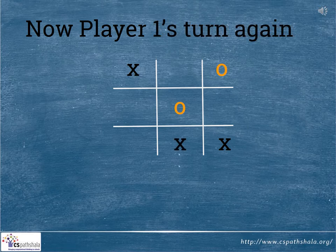Now, player 1's turn again. See where he has put the cross? He has put it below the knot in the middle.